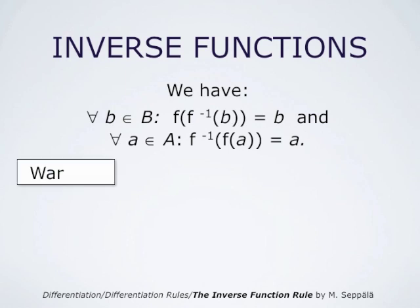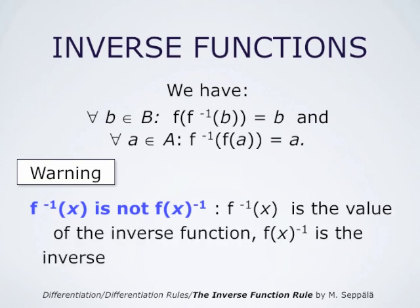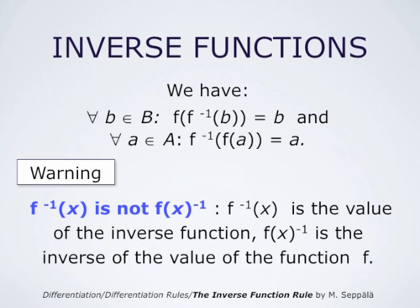One should pay attention to this notation. The inverse function of f evaluated at x is not the same as f(x) to the power negative 1. So f with superscript minus 1 denotes the inverse function. f⁻¹(x) is the value of the inverse function at x, whereas f(x) to the power negative 1 is the inverse of the value f(x) of the function f.